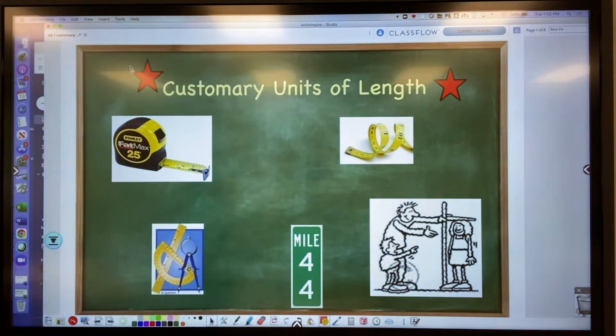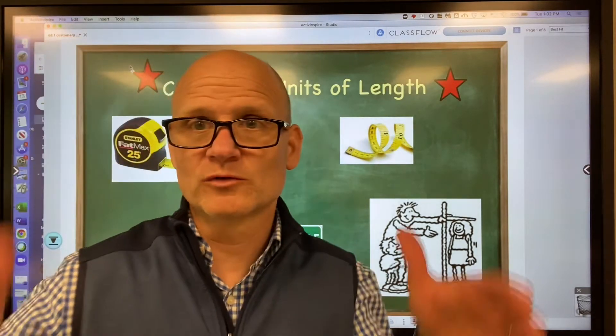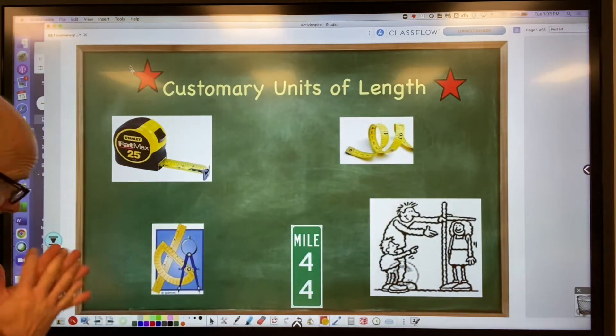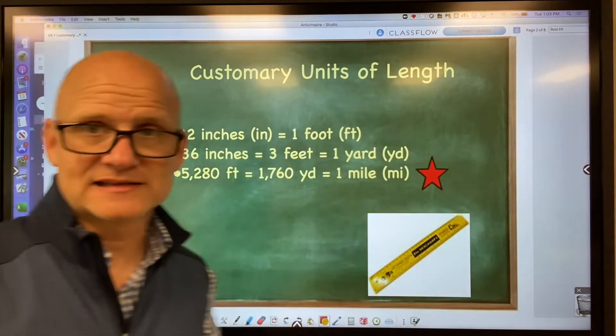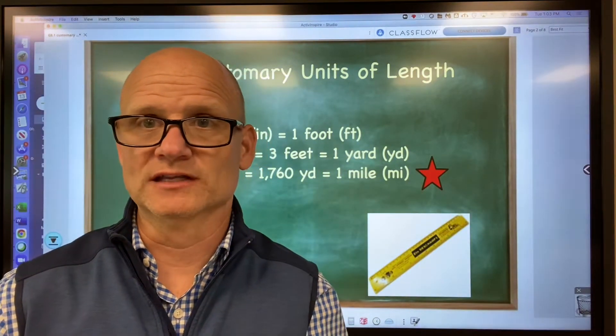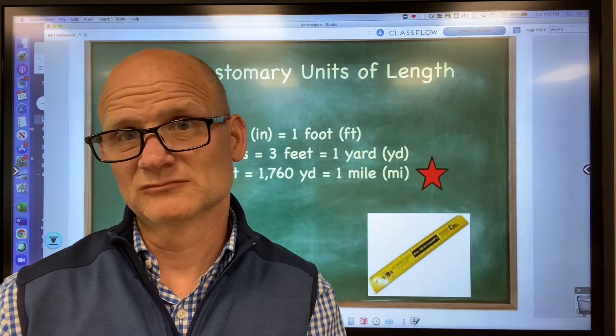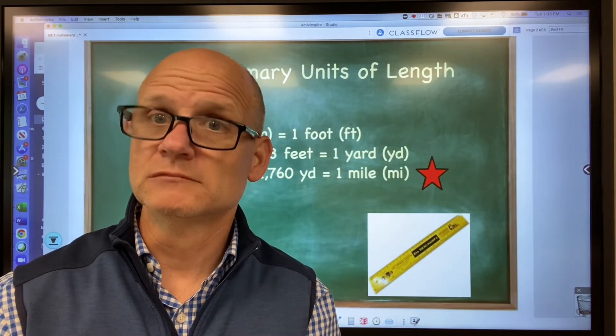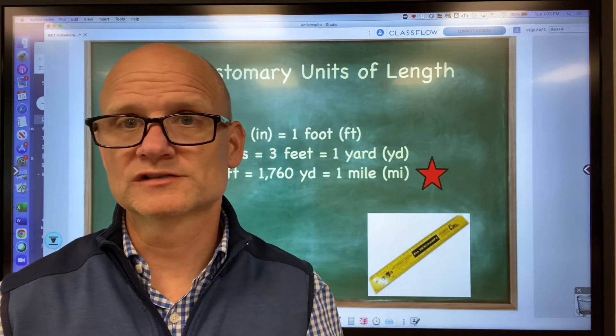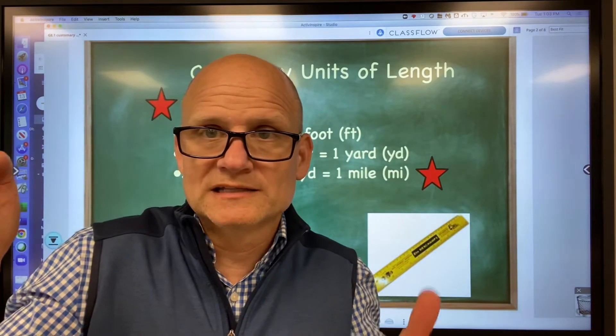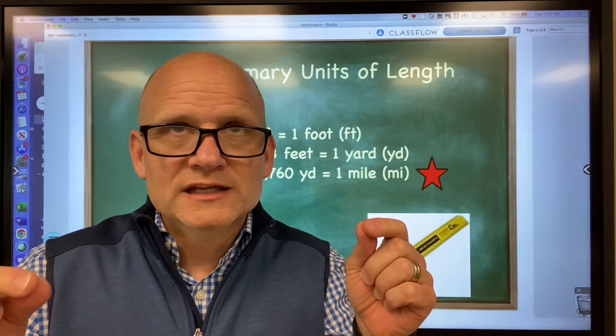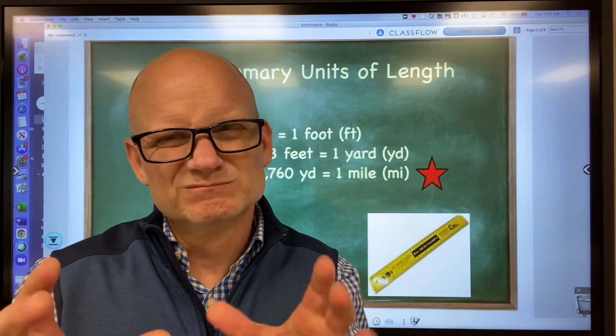Units of length, customary units of length. Length is the measure from one point to another point. The United States has a few units of length that we use: an inch, a foot, a yard, and a mile. These units measure from point A to point B. I think most of you know the equivalencies of these units of length.